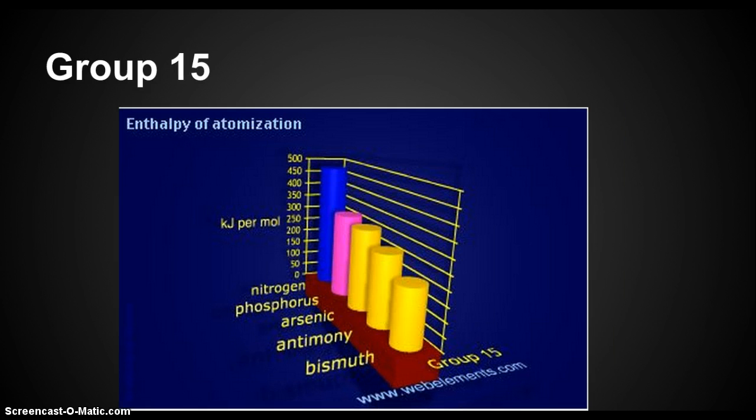Here's group 15. Group 15 is somewhat similar to group 2, in which the first element requires much greater joules per mole than any other element in this group. The joules per mole decrease from left to right, with bismuth having the lowest amount of joules per mole.